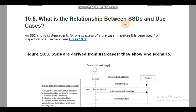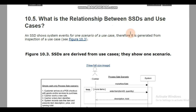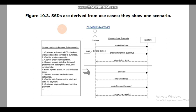Now for the difference between SSDs and use cases: an SSD shows system events for one scenario of a use case. The system sequence diagram shows system events for a particular use case scenario. It is generated from inspection of a use case. In a use case we draw all scenarios and represent every detail, but a system sequence diagram represents only a specific scenario — one scenario at a time. Sequence diagrams are derived from use cases but they show one scenario.